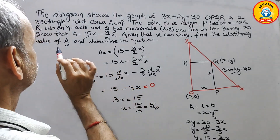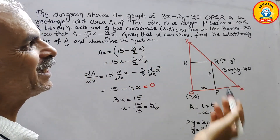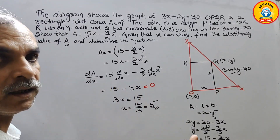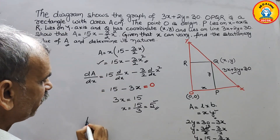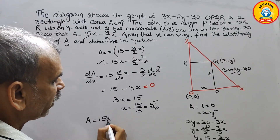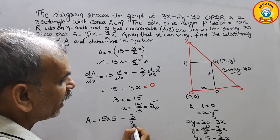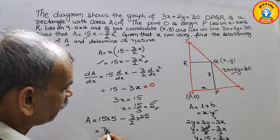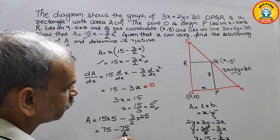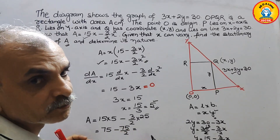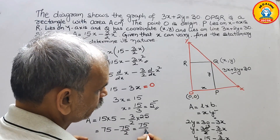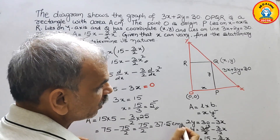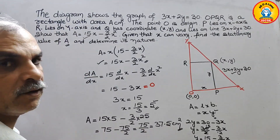They have also asked us to find the stationary value of A. We substitute x = 5 into the area formula: A = 15(5) − (3/2)(5²) = 75 − (3/2)(25) = 75 − 75/2 = 75/2 = 37.5 cm². So the stationary value of A is 37.5 cm².